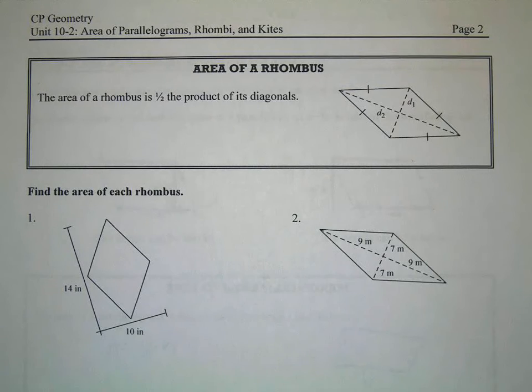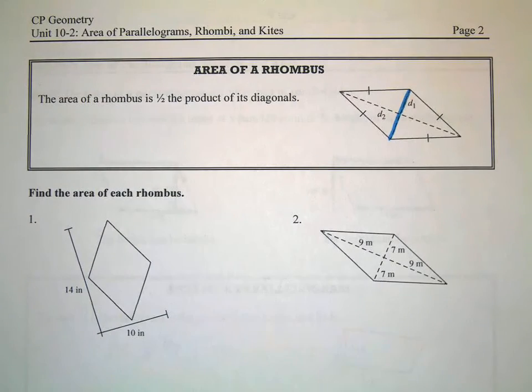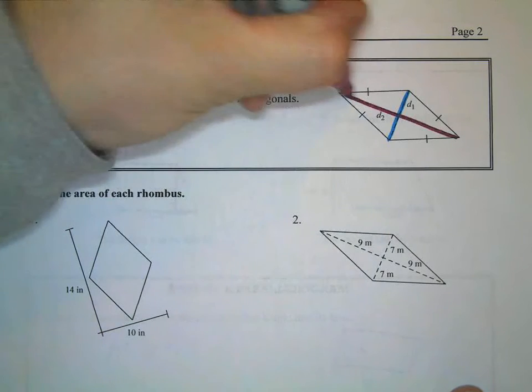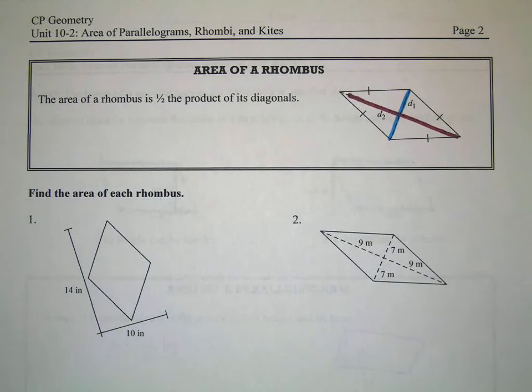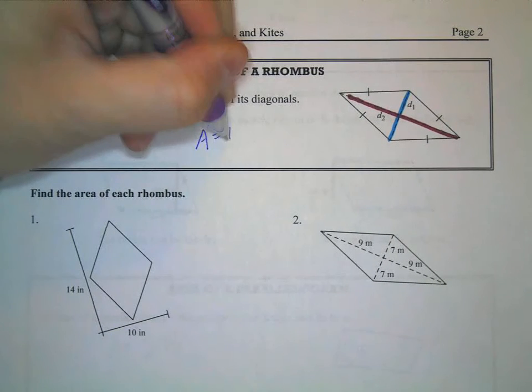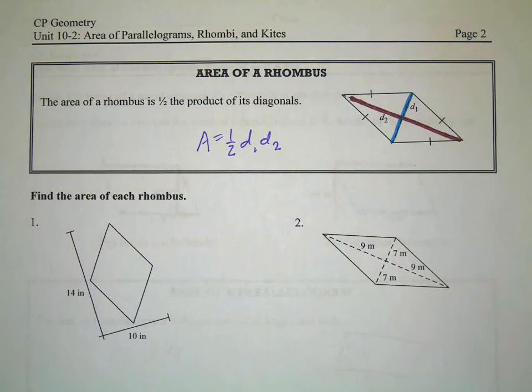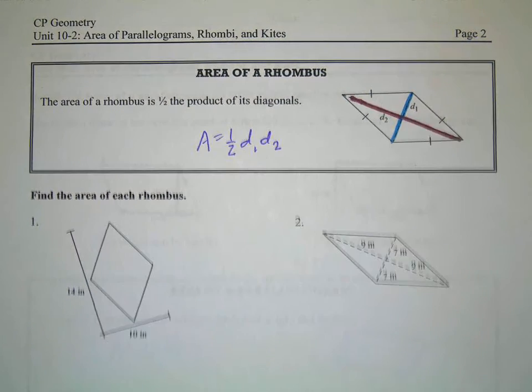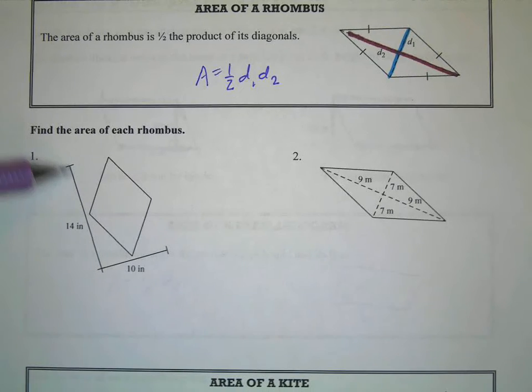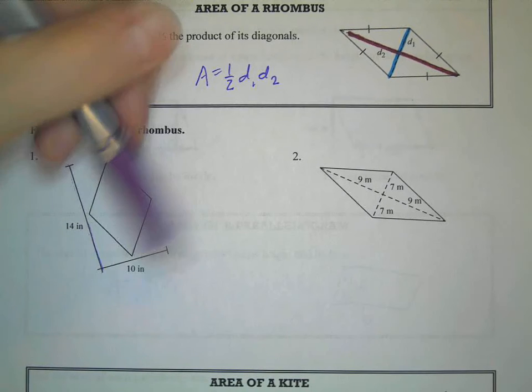Okay, so the diagonals here would be this, which we'll call D1, and this distance. So the formula is 1/2 times D1 times D2. Okay, so they have different ways of showing this.